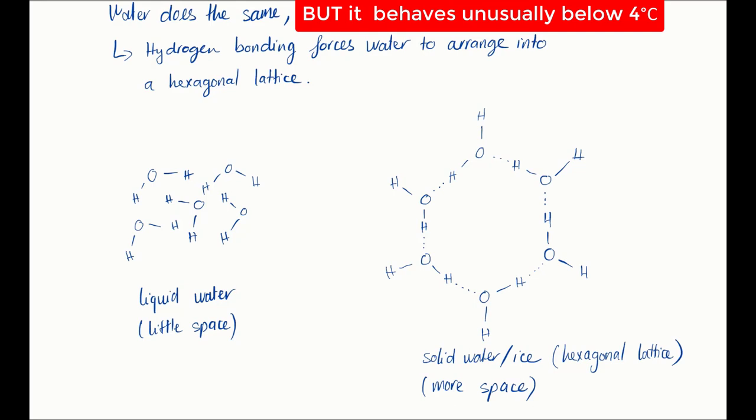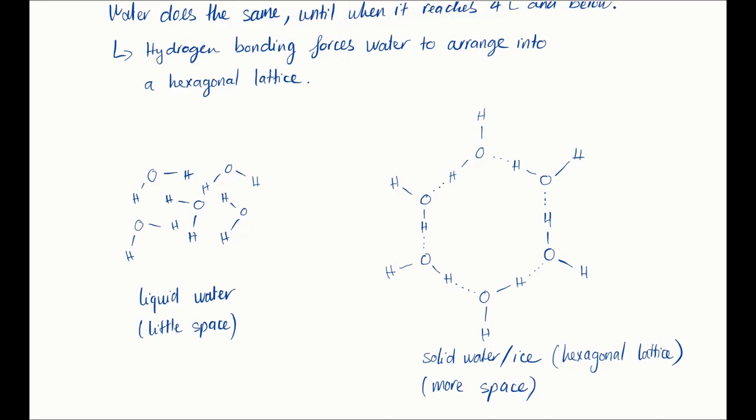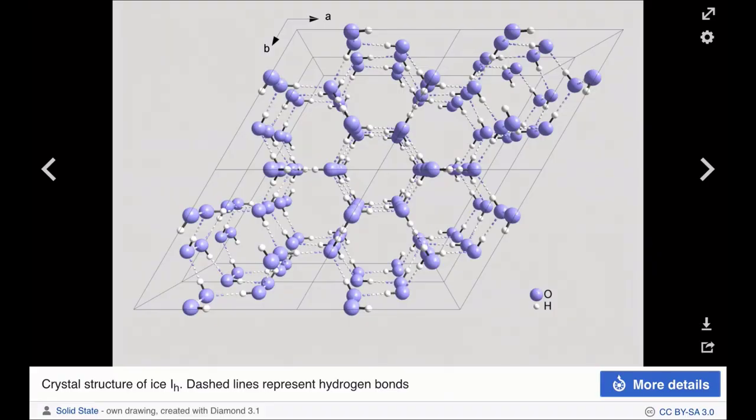Because molecules move around a lot less until it gets to 4 degrees, which is where it starts to arrange itself into this hexagonal crystal structure. And then it will expand until every single water molecule falls into the hexagonal lattice, which we know as ice. This is why ice floats on liquid water, because it's less dense. Here is what the lattice looks like in 3D.